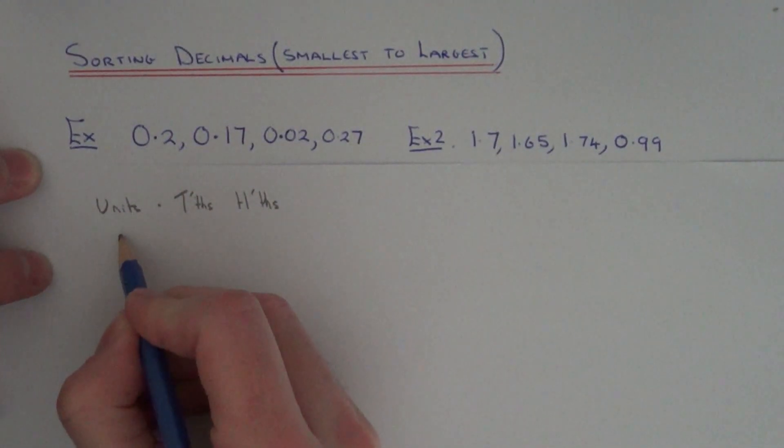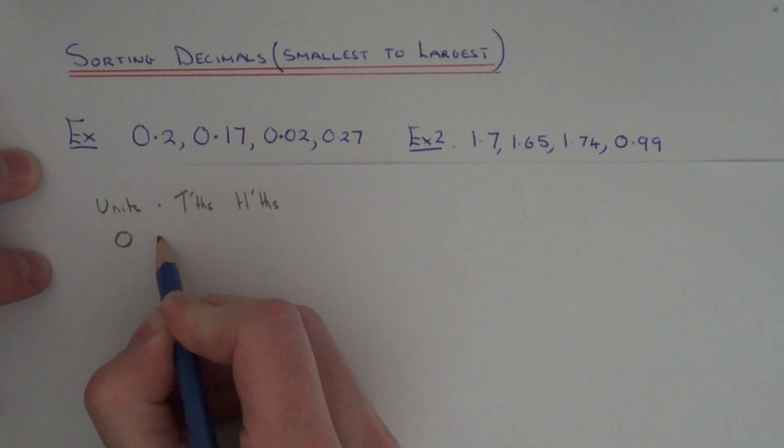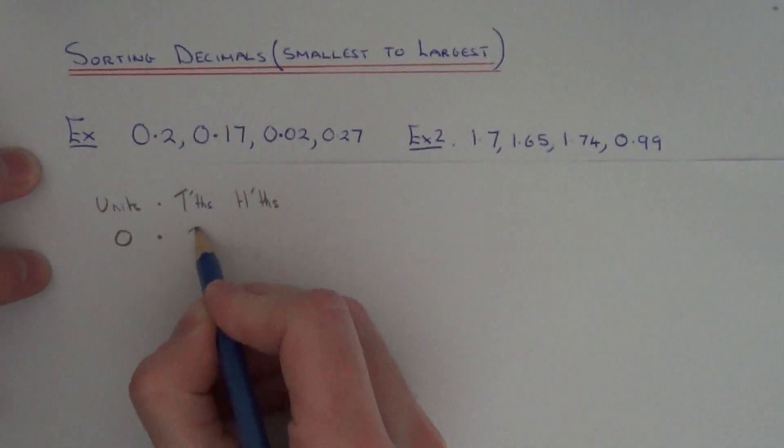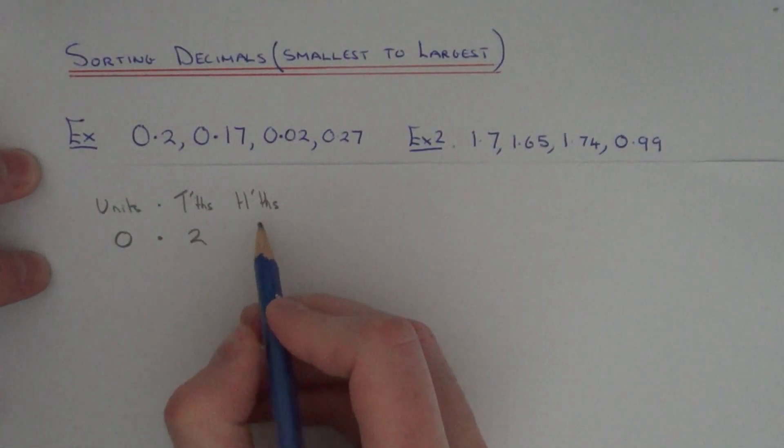So your first decimal is 0.2. So we've got 0 units and 2 tenths. You might want to add a 0 in the hundredths column as well.